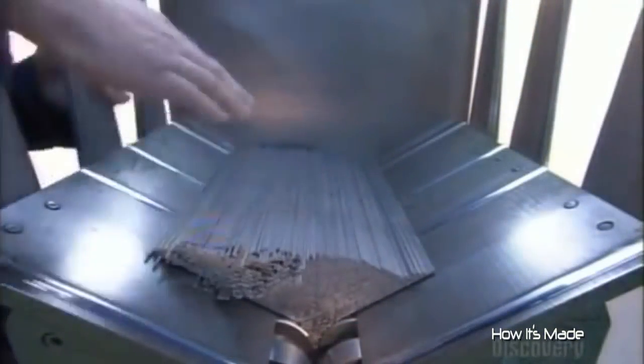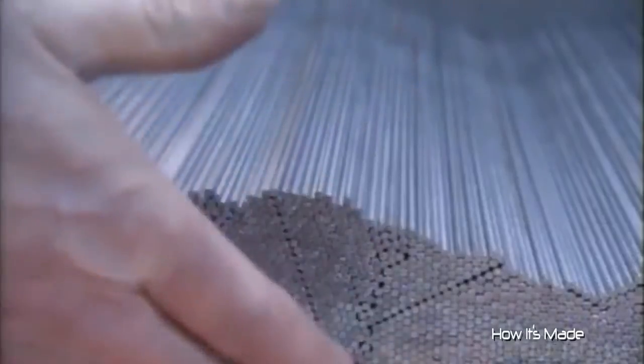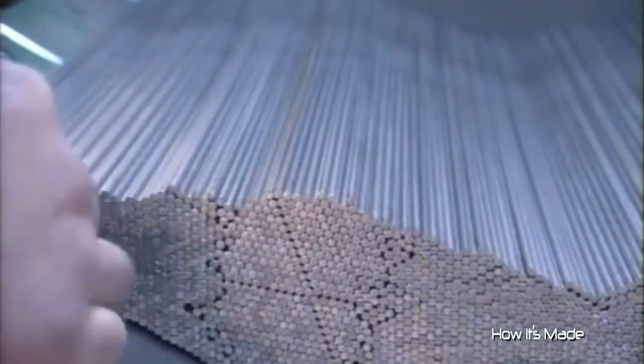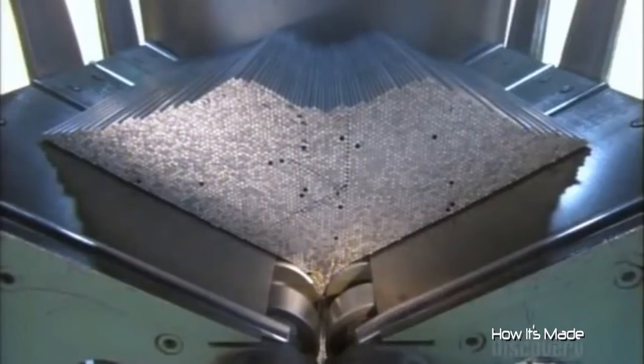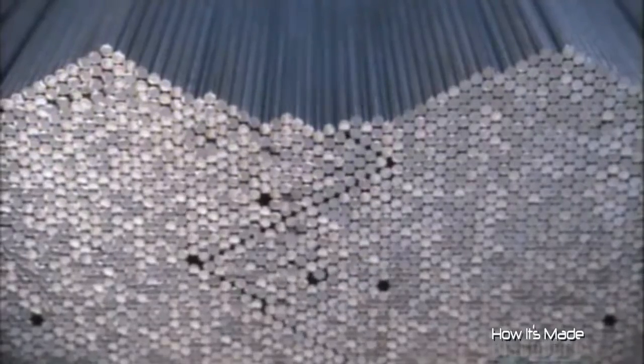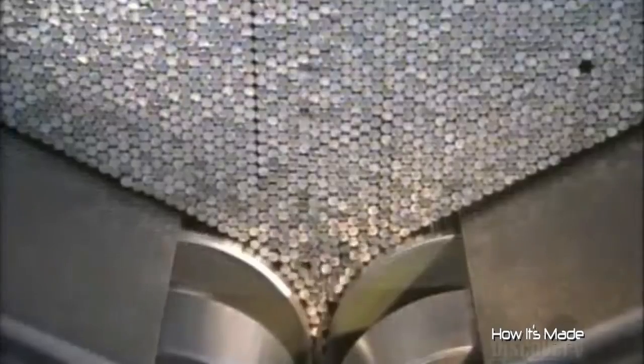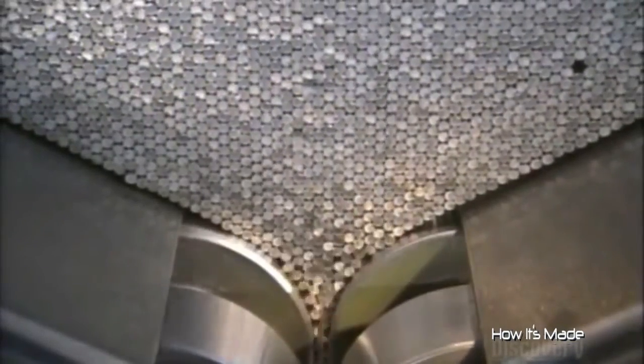To load the wires into the press, they first stack them in this feeder. The opening at the bottom is adjustable for different diameters because core wires range from spaghetti thin to pencil thick. These rollers pass them through the press one at a time.